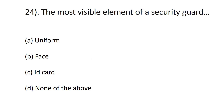Question number twenty-four: the most visible element of a security guard is — uniform, face, ID card, or none of the above. The correct answer is A, uniform, because people recognize the security guard through their uniform.